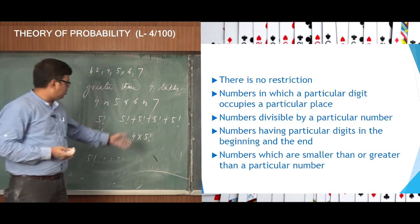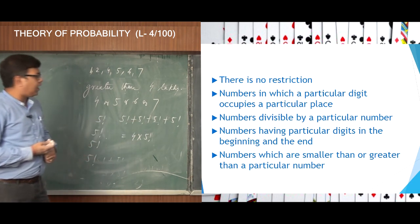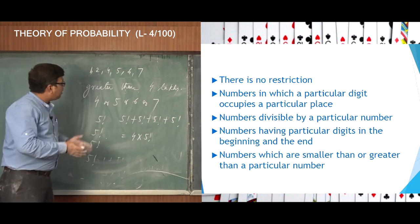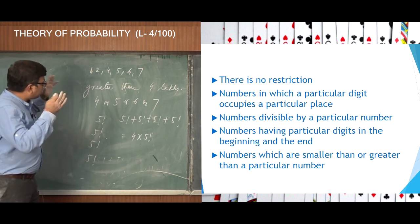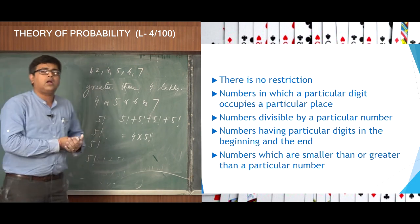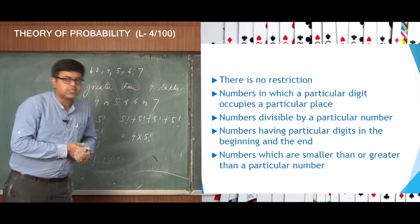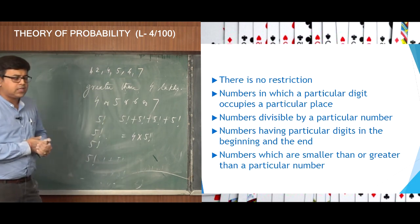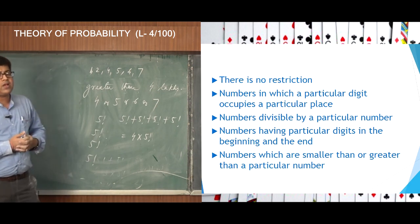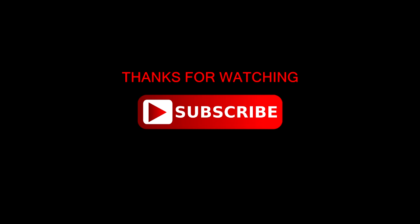So 4 × 5 factorial is the total number of such numbers formed with the digits 1, 2, 4, 5, 6, 7 where the number will be more than 4 lakhs. That is all for today. In the next class, we will be discussing more on restricted permutation. Thank you.